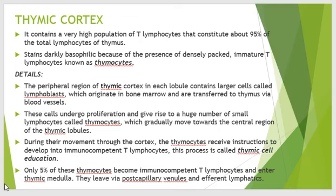Lymphoblasts originate in the bone marrow and are transferred to the thymus via blood vessels. These lymphoblasts undergo proliferation and give rise to a large number of small lymphocytes called thymocytes. The thymocytes move from the peripheral region to the central region of the thymus. During their movement through the cortex from the periphery to the center, these thymocytes receive instructions to develop into immunocompetent T lymphocytes, a process called thymic cell education.